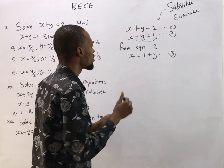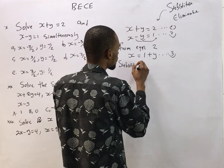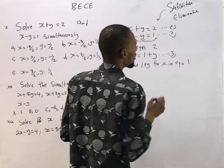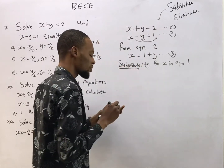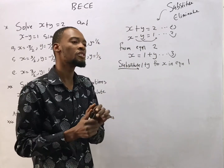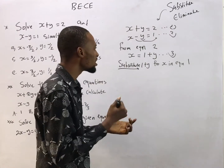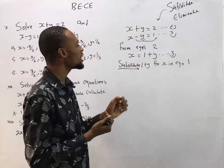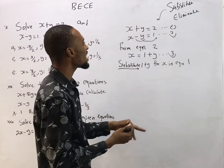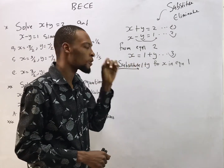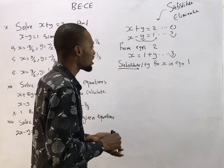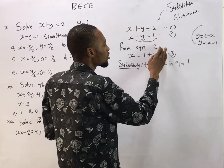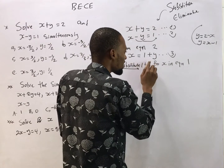Now that we have equation 3, substitute 1 plus y for s in equation 1 — hence it is called the substitution method. After numbering the equations, look for any equation and make s or y the subject formula. I'm choosing equation 2 and making s the subject formula, getting s equals 1 plus y. I will now substitute this value of s into equation 1.